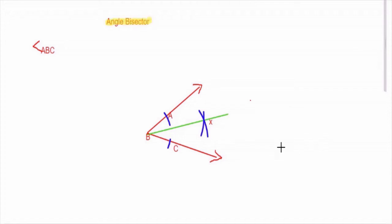The angle bisector is BX here. You need to repeat this — repeat the video so that it can be fixed properly in your mind. This is something which you have learned earlier. The next one is constructing a perpendicular bisector of a line segment.